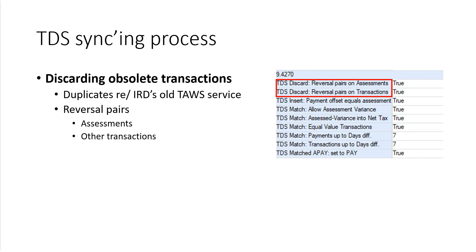Subsequent syncing steps are optional, and only performed if the system setting, as you can see on the right, has been set to true. Two settings control discarding of reversal transaction pairs. A reversal is a transaction that has a link to another transaction and reverses the effect of the original transaction. Reversals of provisional and return assessments are treated separately from reversals affecting all other transactions.